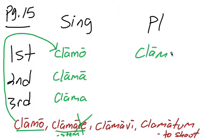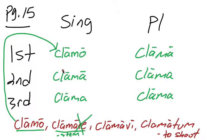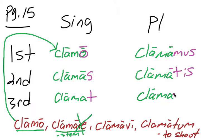Now that we have the stem, we add the personal endings. We already have our -o: clamo. Then -s: clamas. Then -t: clamat. Then -mus: clamamus. Clamatis. And -ent: clamant. Regarding the macrons: they go on the second person singular and plural, and also on the first person plural on the stem vowel. There are no macrons over the stem vowel in the third person.